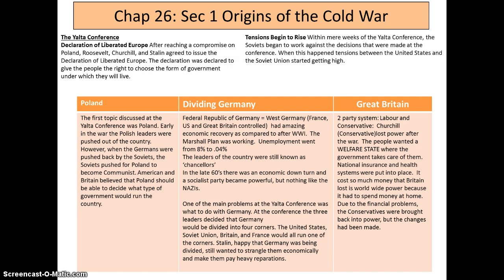Looking at dividing Germany: West Germany, known as the Federal Republic of Germany, was controlled by France, the US, and Great Britain. It had an amazing economic recovery compared to after World War I — the Marshall Plan was working, and unemployment went from 8% to 0.04%. The leaders were still known as chancellors. In the late 60s there was an economic downturn and the Socialist Party became powerful, but nothing like the Nazis.